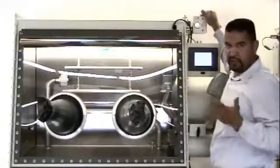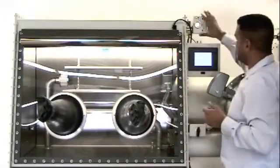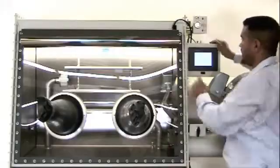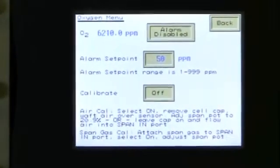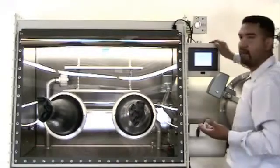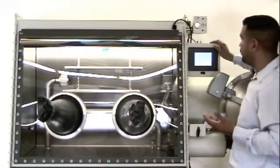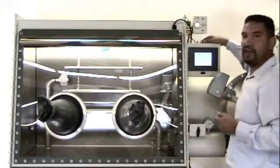Aside from the two millimeter flathead screwdriver for your span adjustment, once you've made your adjustment, simply deactivate the calibration routine and press back to return to the main menu. You should now observe that the oxygen readings are trending down. And that is how you calibrate the Nexus 2 oxygen analyzer.